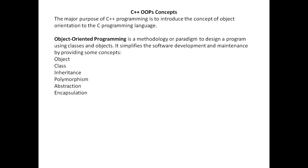Object oriented programming involves classes and objects. There are many benefits: it simplifies logic, and whatever programming strategy we followed in C language was procedure oriented approach. In the object oriented approach, we have more flexibility, more clarity, and other benefits like reusability, reduction of code, and easy to read the program. Some object oriented concepts are inheritance, polymorphism, abstraction, and encapsulation.